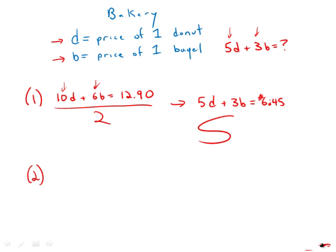Now statement number two tells us the price of a donut is 15 cents less than the price of a bagel. So the price of a donut is the price of a bagel minus $0.15. This is just a single equation. By itself, this does not allow us to solve for the value of 5D plus 3B, so this by itself is insufficient.